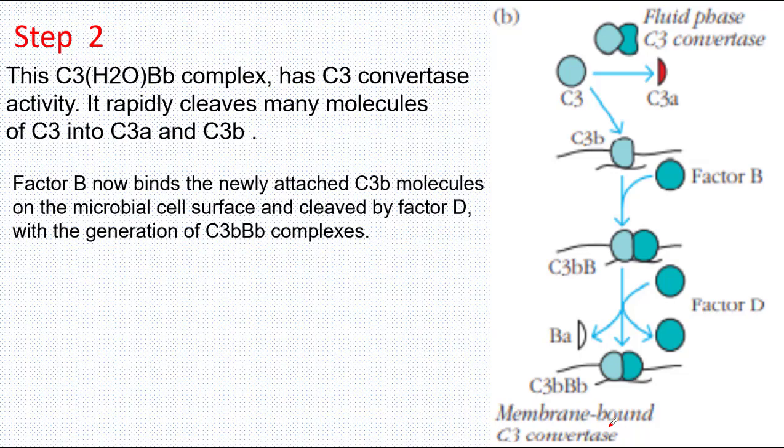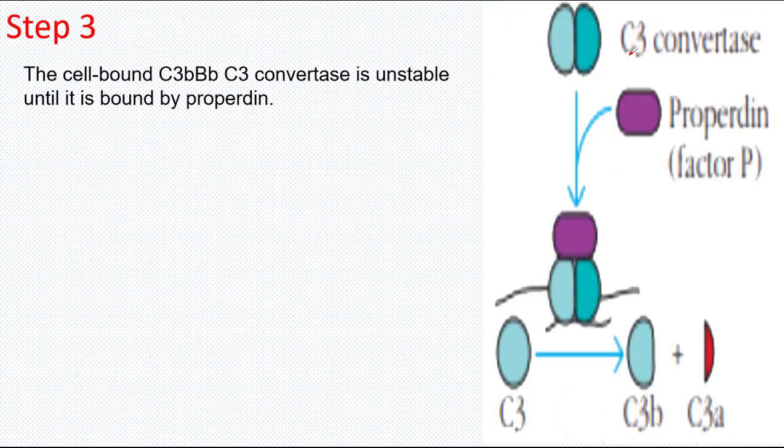We can see that in the alternative pathway, two different C3 Convertases are formed: one is present in the Fluid Phase and the other on the surface of the pathogen. Fluid Phase C3 Convertase kicks off the alternative pathway, but the membrane-bound C3 Convertase performs the basic function.